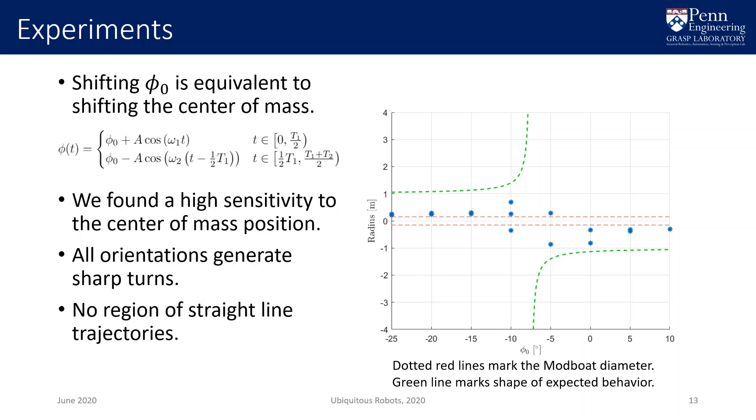The results are shown in this plot, with the modboat diameter added as a reference. Straight lines would appear as large radii tending to infinity. We would expect behaviors similar to the green line, with straight lines when the boat is balanced and turns when it is not. But we observe no straight lines over the entire range. We get either sharp counterclockwise turns or sharp clockwise turns with a sharp transition between them. Why does this happen despite only minor asymmetries?